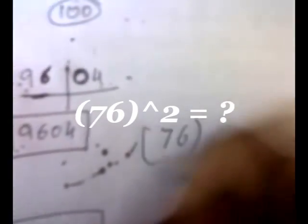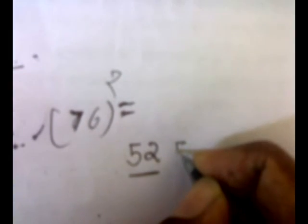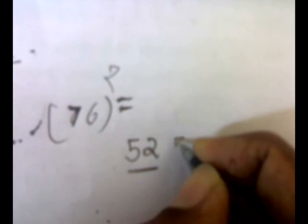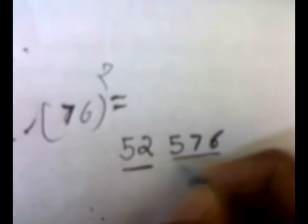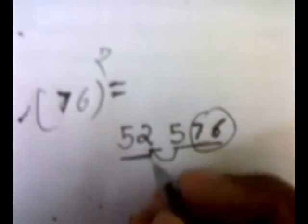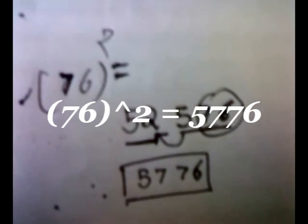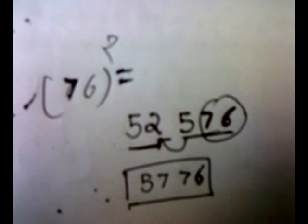Let's take 76 squared. 76 is 24 away from 100. We subtract 24 from 76 to get 52 — the first two digits. The square of 24 is 576. We put the last two digits 76 as it is, and add 5 to 52, giving 57. So our answer is 5776.